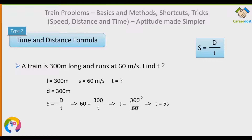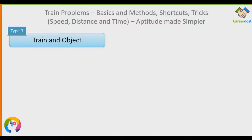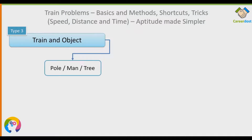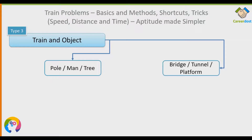They could give you any two variables and ask you to find the third in the speed, distance and time formula. So let's come to the third type of train problem — Train and Object.